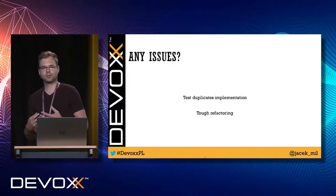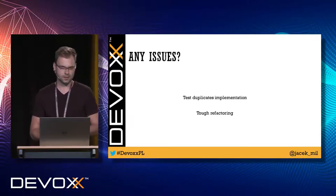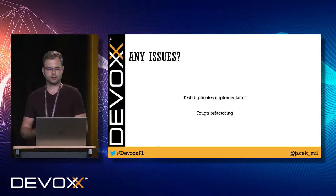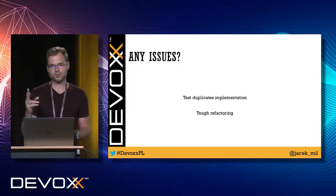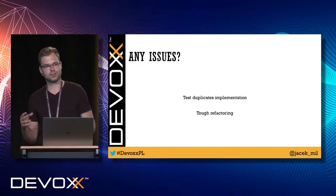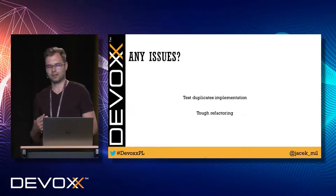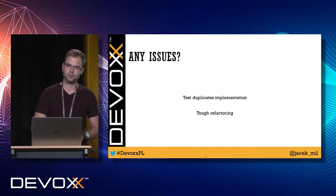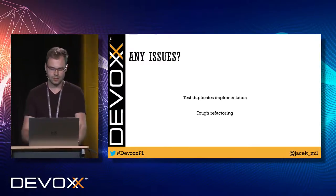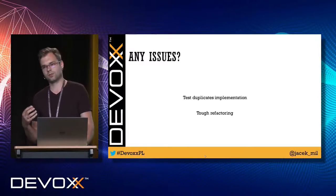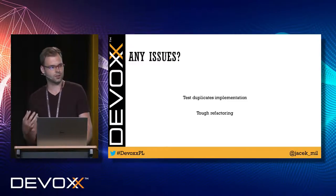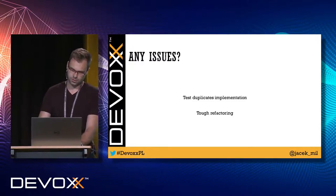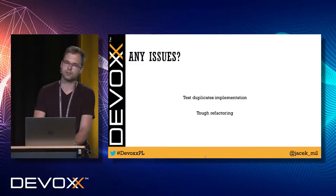Now I want to stop and highlight some issues with this code. There are two problems. First: the test duplicates the implementation — it knows too much about the internal details. Second: refactoring this code is problematic. Tests should help us refactor without breaking things, but in this case, refactoring is difficult. So: duplication of knowledge in tests, and difficulty with refactoring — those are the two issues we need to address.